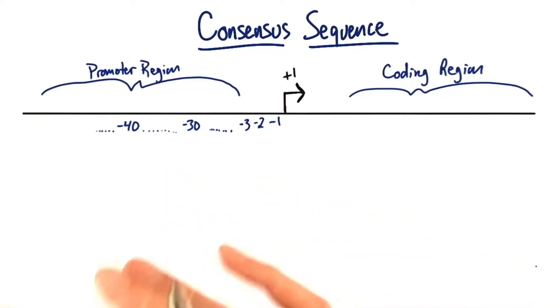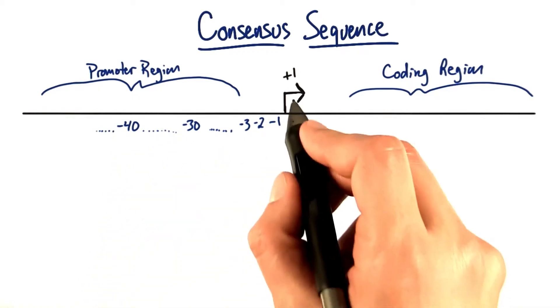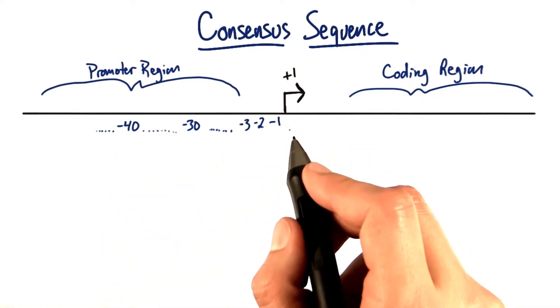Now in the human genome there's a consensus sequence that's usually about 30 to 40 base pairs away in front of the transcription start site of most genes.